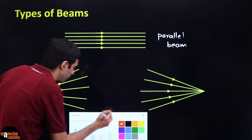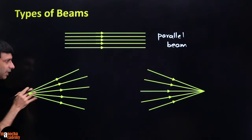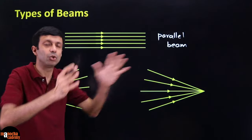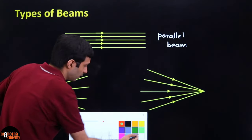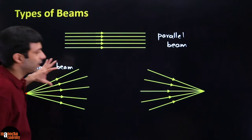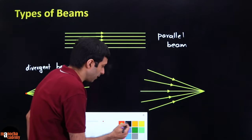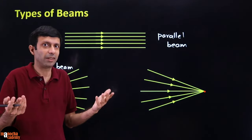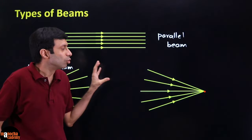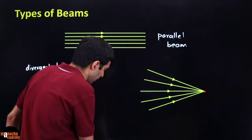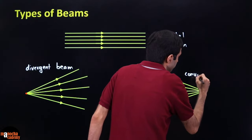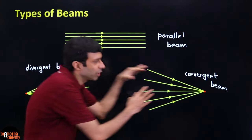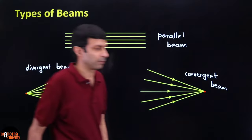In a divergent beam, rays spread away from a source point. In a convergent beam, rays meet at a single point — we say they converge. Diverging means spreading away; converging is the opposite, with rays of light meeting at a single point. Now let's move on to reflection of light.